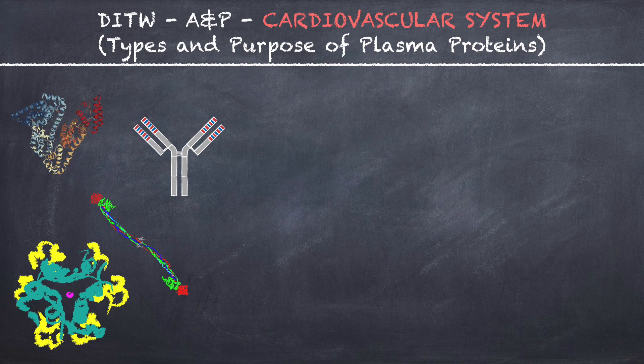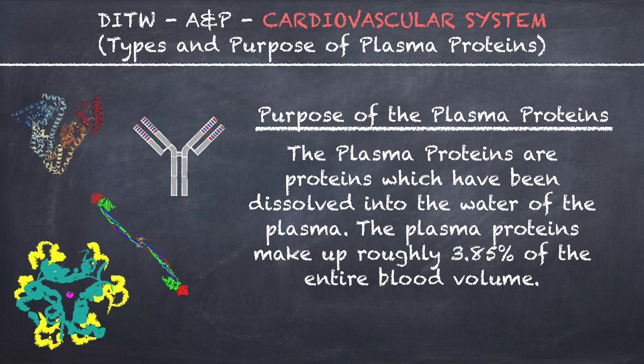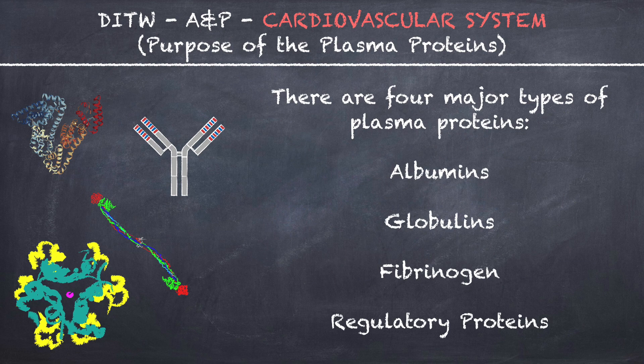This is DITW Anatomy and Physiology and you are now watching the video on the types and purpose of plasma proteins. The plasma proteins are proteins which have been dissolved into the water of the plasma. The plasma proteins make up roughly 3.85% of the entire blood volume. There are four major types of plasma proteins: